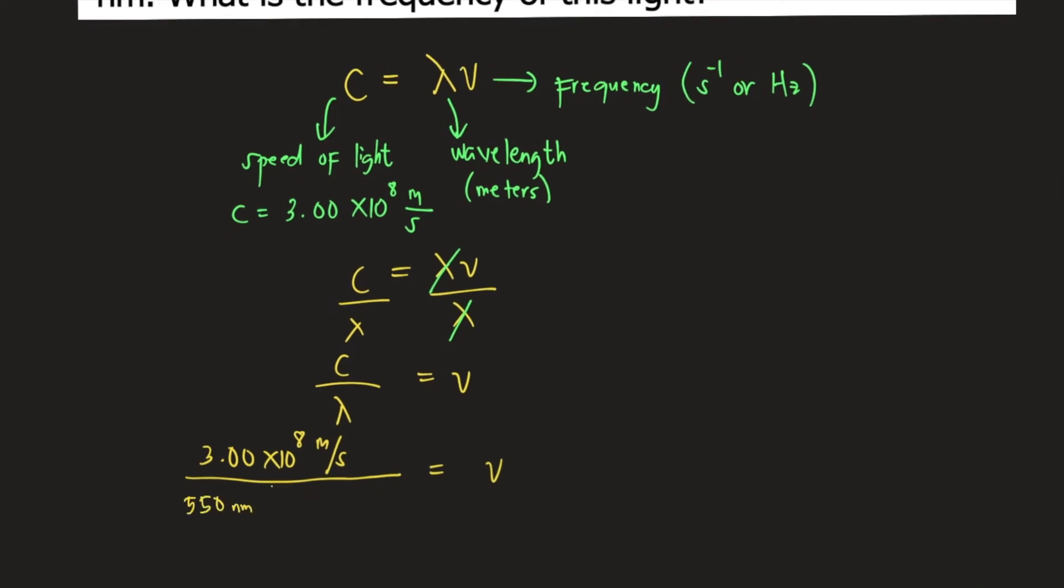550 nanometers. Don't forget to convert that into meters. The unit for wavelength must be in meters. We know the conversion.